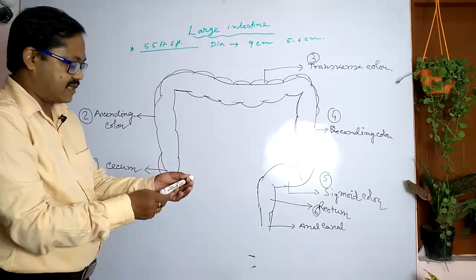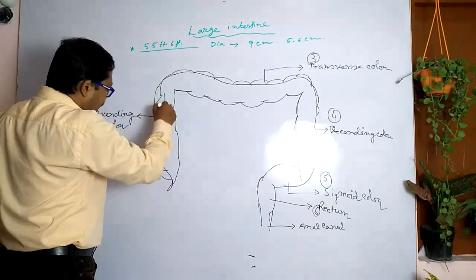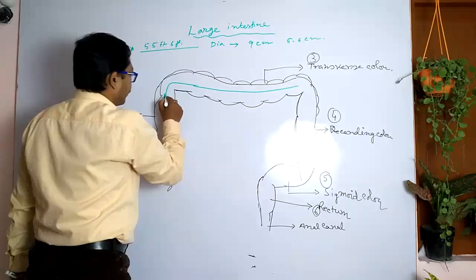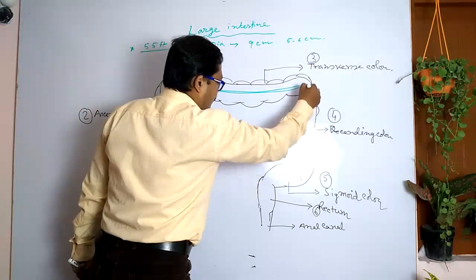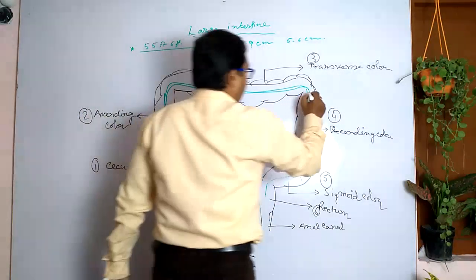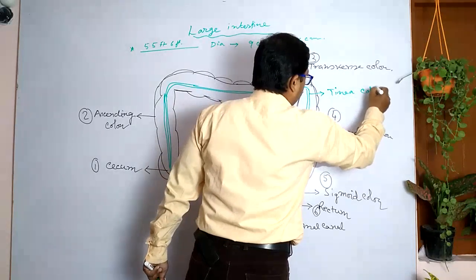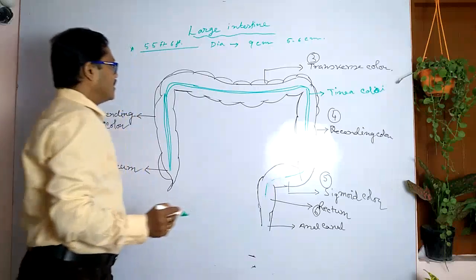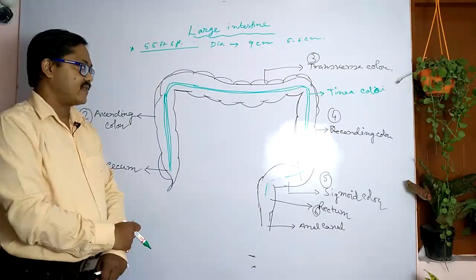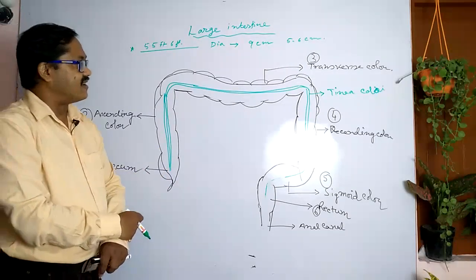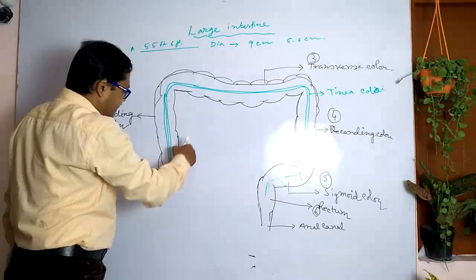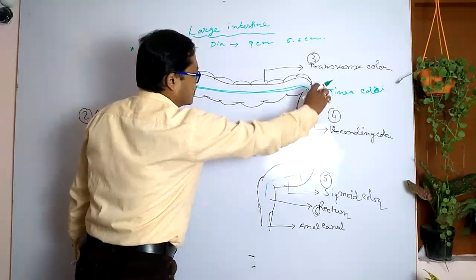Some salient features of the large intestine: three bands of longitudinal muscles are found in the large intestine. These bands are called taenia coli. Taenia coli are longitudinal muscular bands present in the large intestine. There are three taenia coli — one on the dorsal side and two on the lateral sides.